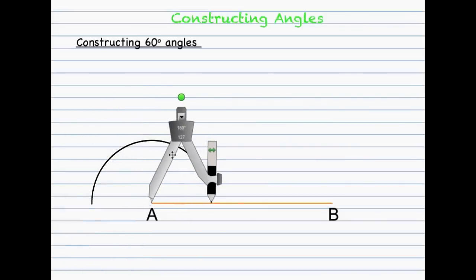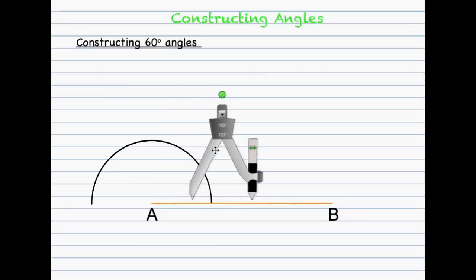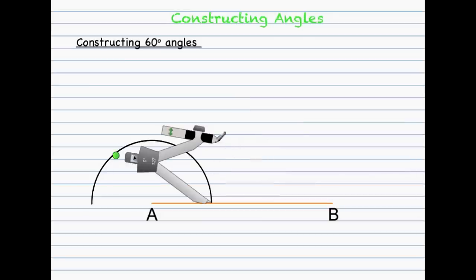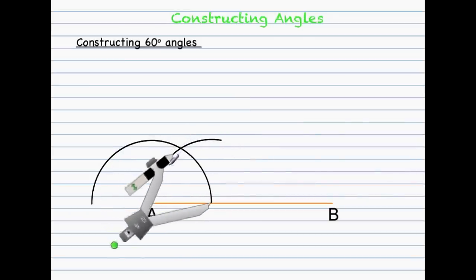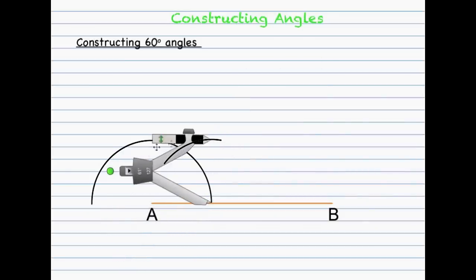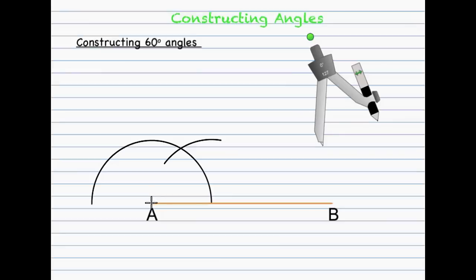Bring the compass up ensuring that you don't adjust the width of it in any way, then take it to the point where the semicircle and the line meet. Create a new arc which cuts the first one. The only thing left to do is draw a line connecting point A to the intersection of those two arcs — and that's how you form the 60 degree angle.